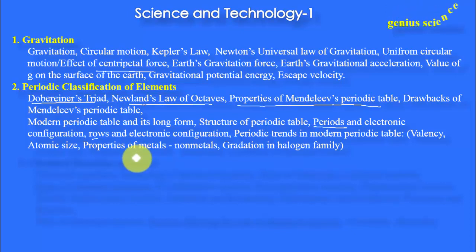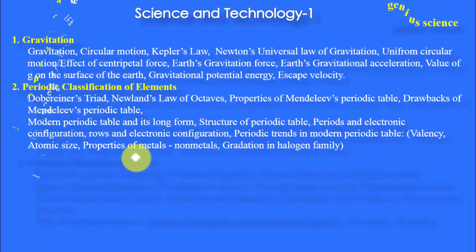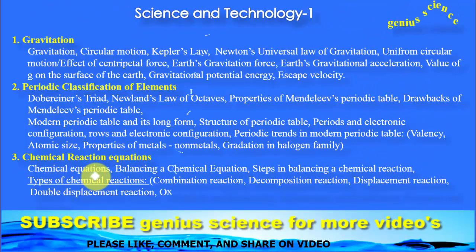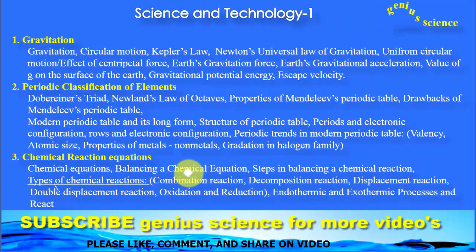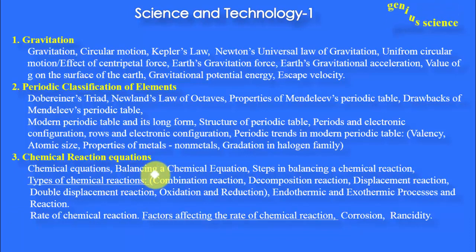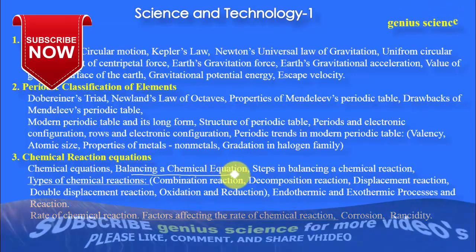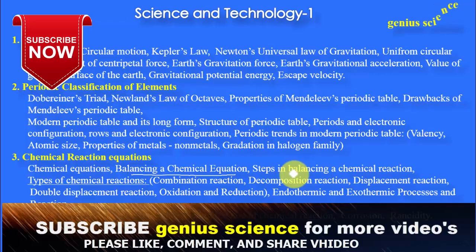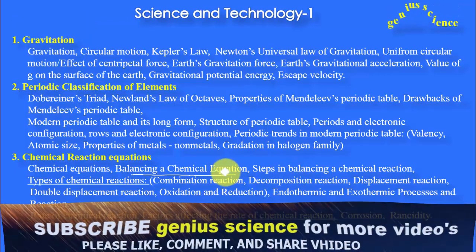The next chapter is Chemical Reactions and Equations. In this chapter, balancing a chemical equation — how we can balance the chemical equation — in terms of reactants and products, where are the reactants and where are the products, the total number of atoms on the left side and total number of atoms on the right side. This is the balancing of chemical equations, and we must learn the steps in balancing a chemical reaction.